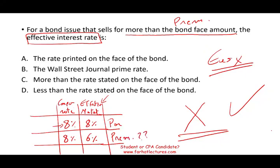Why? Because the coupon rate is more than the market rate — your company is paying 2% more. Now, if the company is offering 8% and the market is requiring 10%, your bonds sell at a discount. Why? Because you're offering 8% and the market is offering 10%. No one in the right mind will buy your bond for full price and get 8% when they can go to the market and get a bond that pays 10%.